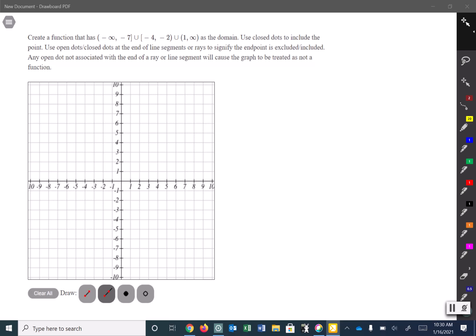Create a function that has negative infinity to negative 7, inclusive, union negative 4 to negative 2, including the negative 4 but excluding the negative 2, and union 1 to infinity, exclusive as the domain.